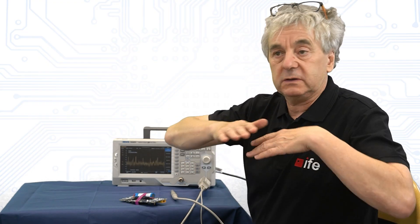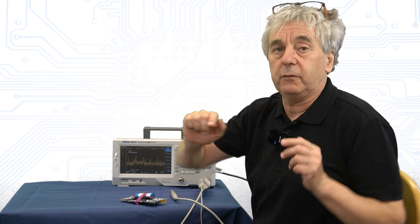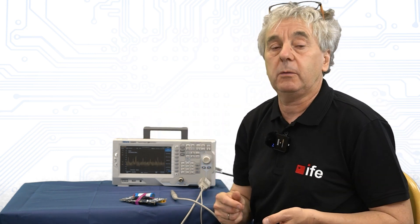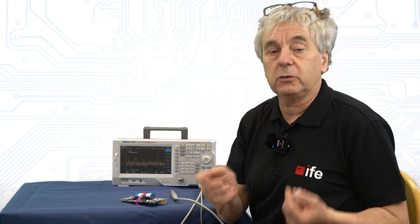What one should look for in near field scanning is weak or medium strong signals distributed over areas which are large enough to form antennas. One should not look for hotspots.